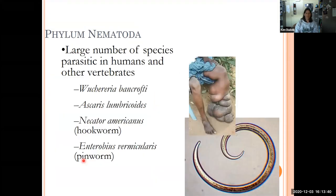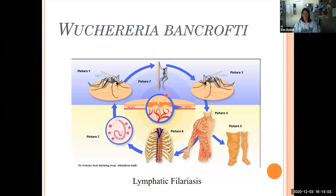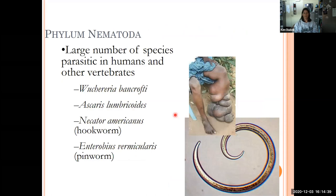A large number of nematode species tend to be parasitic in humans and other vertebrates. Wuchereria bancrofti is a species that can get into the lymphatic system of humans and clogs up the lymphatic vessels. The mosquito carries the larvae and injects them when it bites you. They develop and get into your lymph system, and when they clog it, they prevent you from absorbing extra fluid in your tissue, causing edema. The life cycle requires two hosts to continue. It's actually pretty easily treated, but we see it a lot in developing countries because of limited access to medicine.